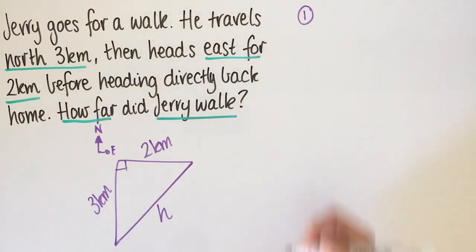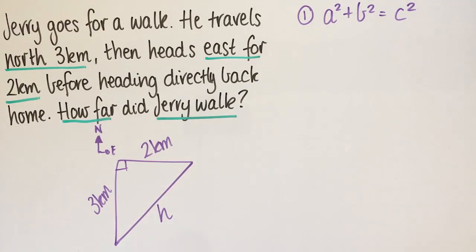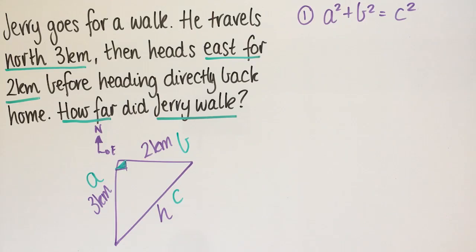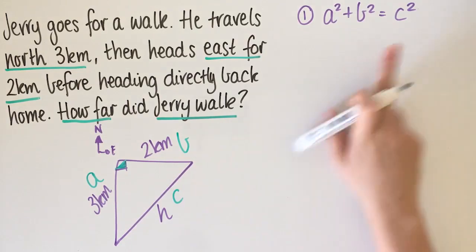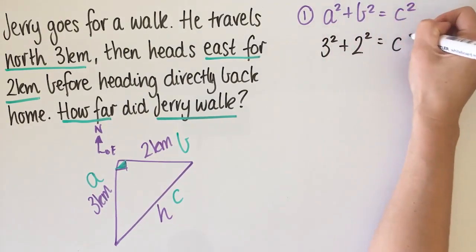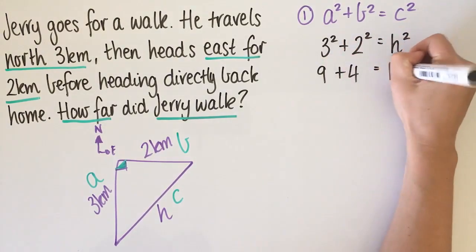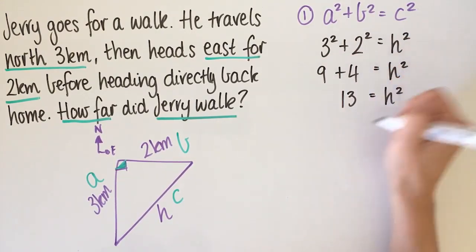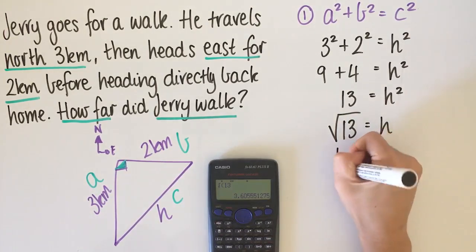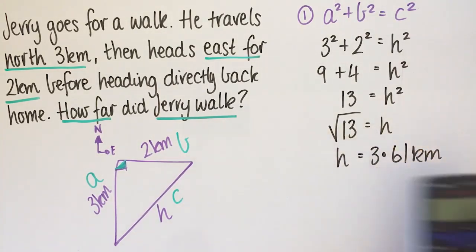Step one: find H using A² + B² = C². The diagonal H is opposite the right angle, so it's C. Substituting A = 3 and B = 2: 3² + 2² = H², so 9 + 4 = H², giving H² = 13. Taking the square root of 13 gives H = 3.61 kilometres.